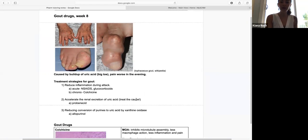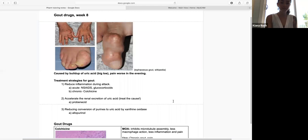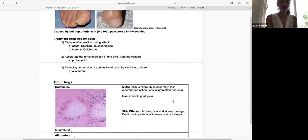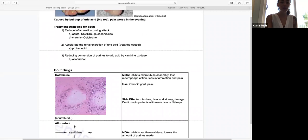Patients usually have pain that is worse in the evening, and there are three strategies for treatment. The first strategy is to reduce inflammation. In acute inflammation, you can use NSAIDs or glucocorticoids. In chronic inflammation, you can use colchicine.